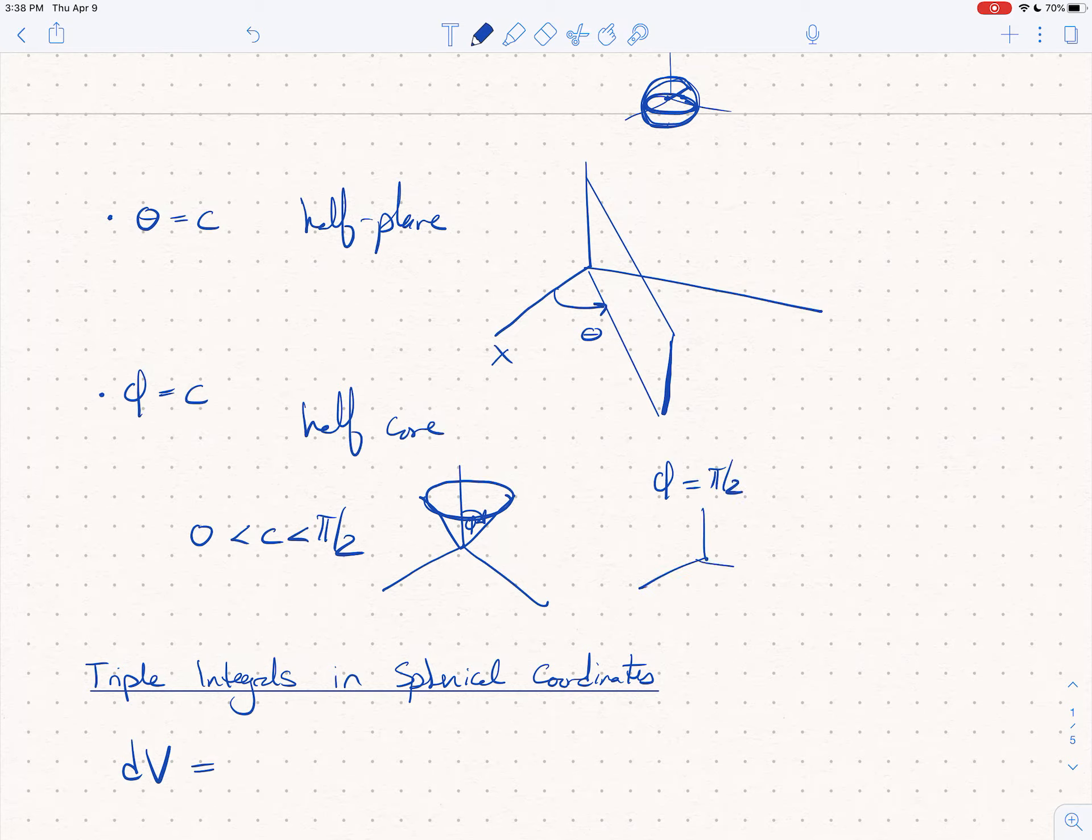And so if you want to go ahead and set phi equals to pi halves exactly, then you actually get the coordinate plane z equals zero, right? Because I don't care what rho is. Rho can be as far out as you want and theta swings you around. And so you pick up the entire plane. So theta equals c can be a half cone or it can be the z equals zero plane or it can be the cone that points down as well.